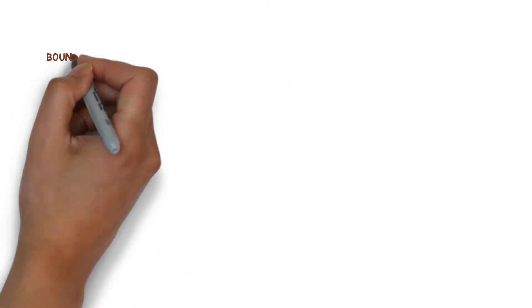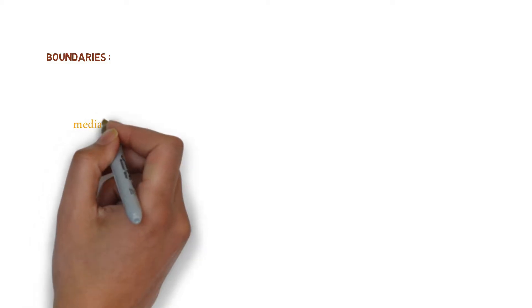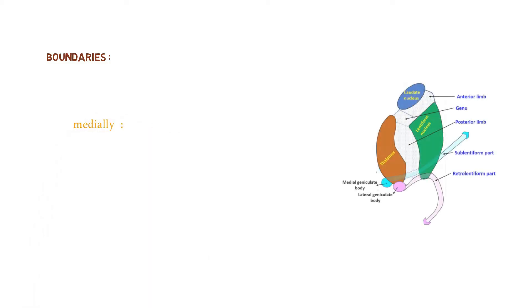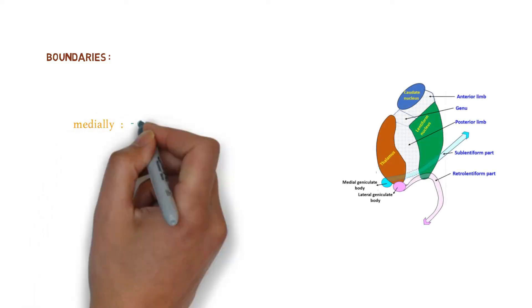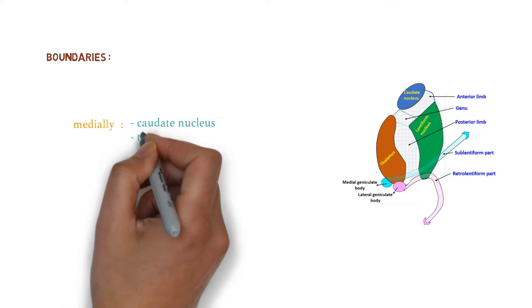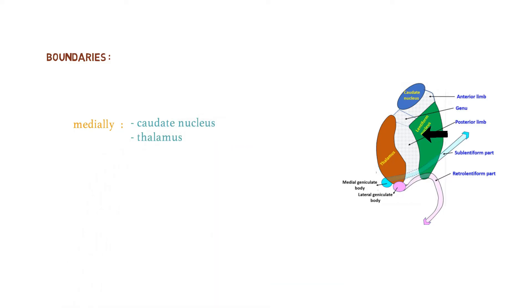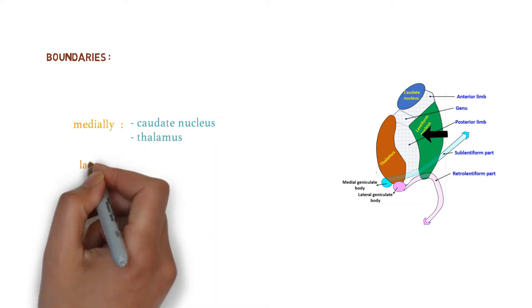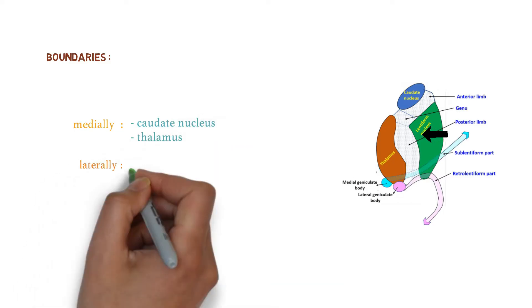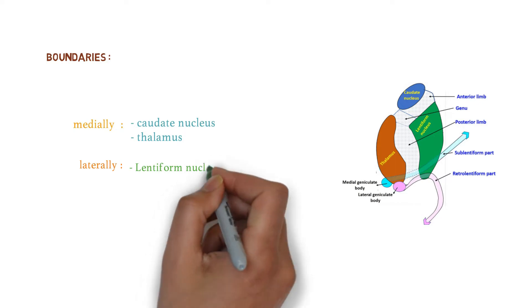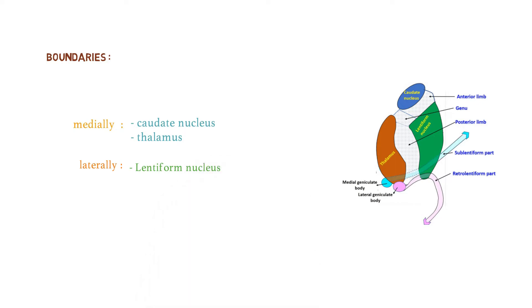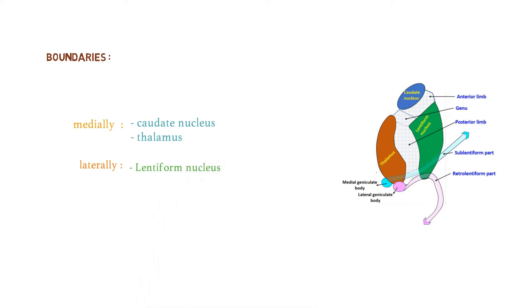Regarding the boundaries of the internal capsule: medially we have the caudate nucleus and thalamus, and laterally we have the lentiform nucleus.